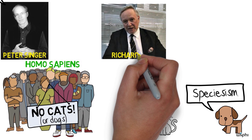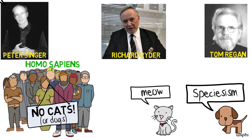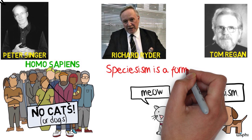For that reason, Richard Ryder, Peter Singer, Tom Regan, and many other philosophers have argued that speciesism is wrong for the same reason that racism and sexism are. They are all forms of prejudice in favor of one group over another group solely on the basis of membership in a particular biological category.